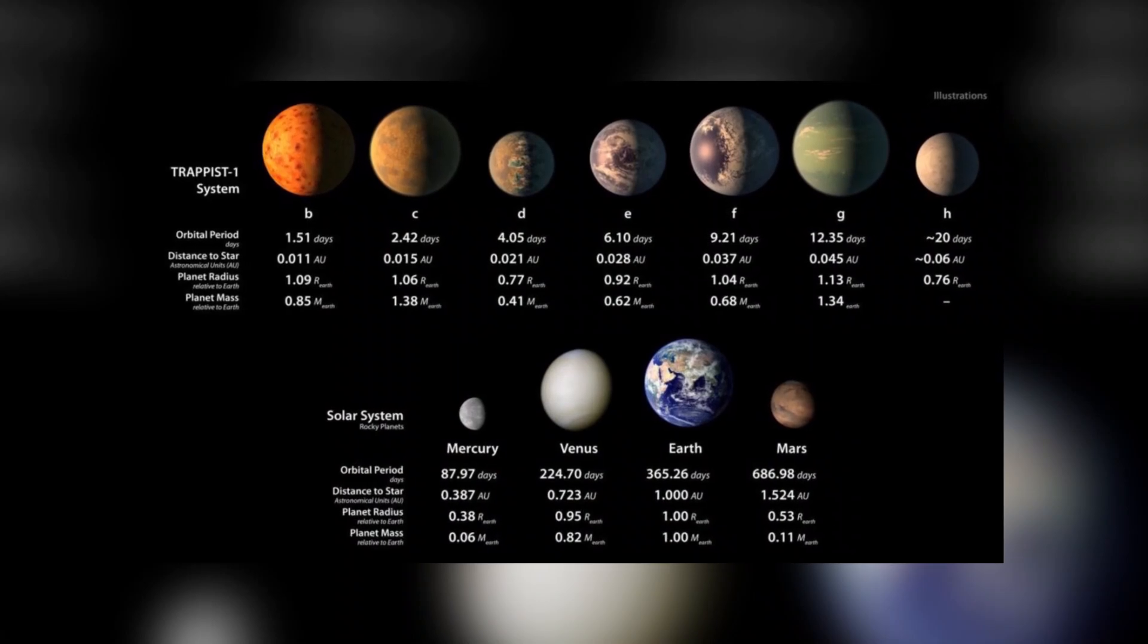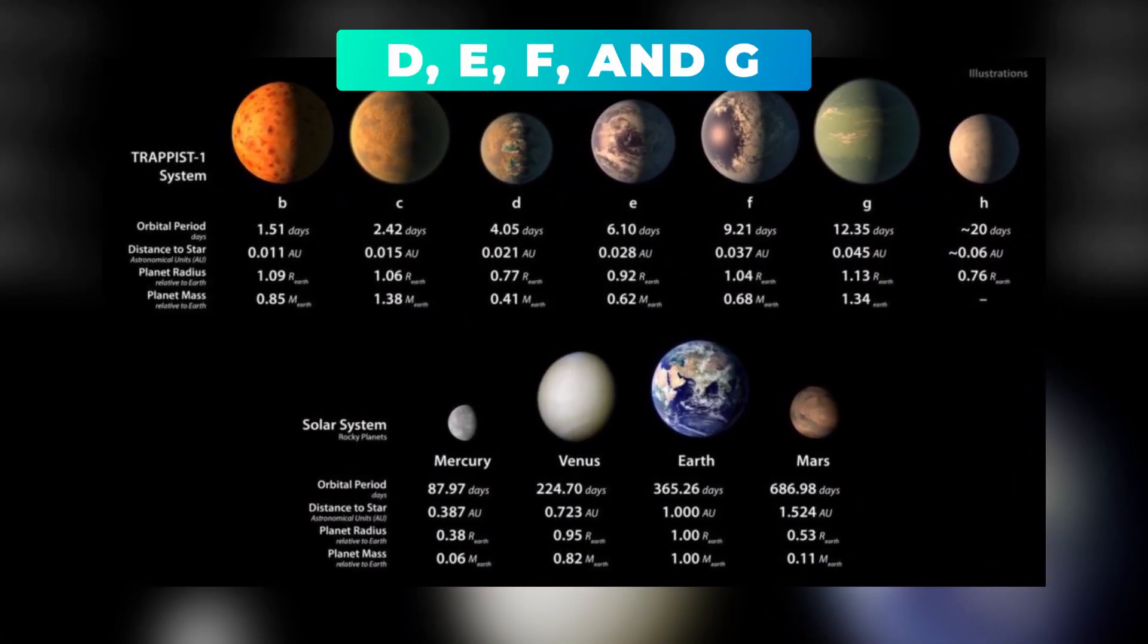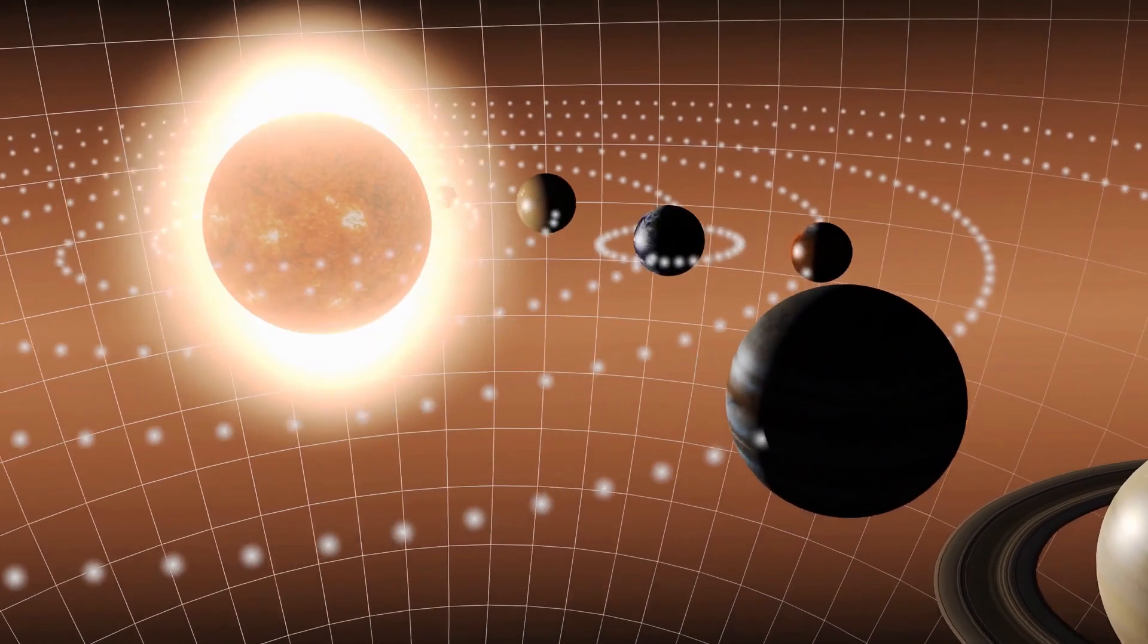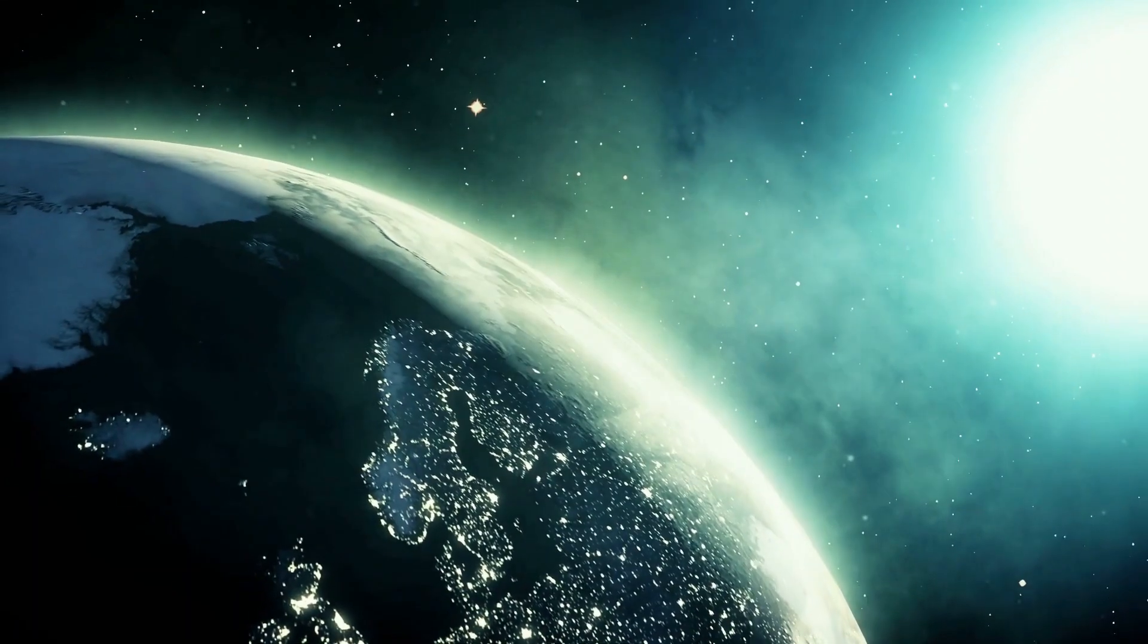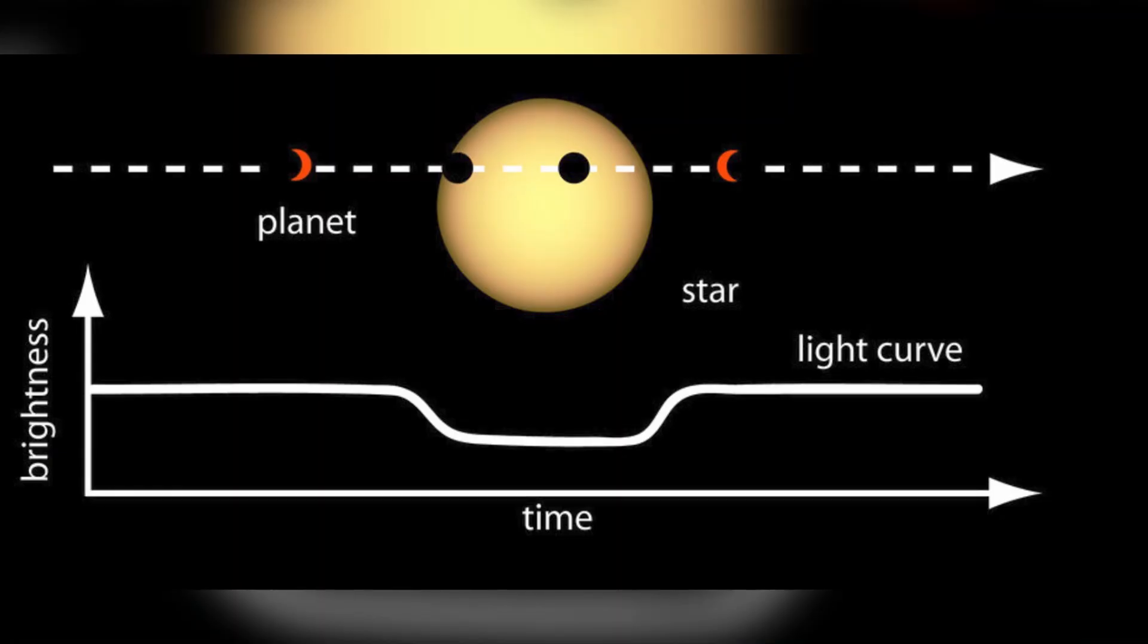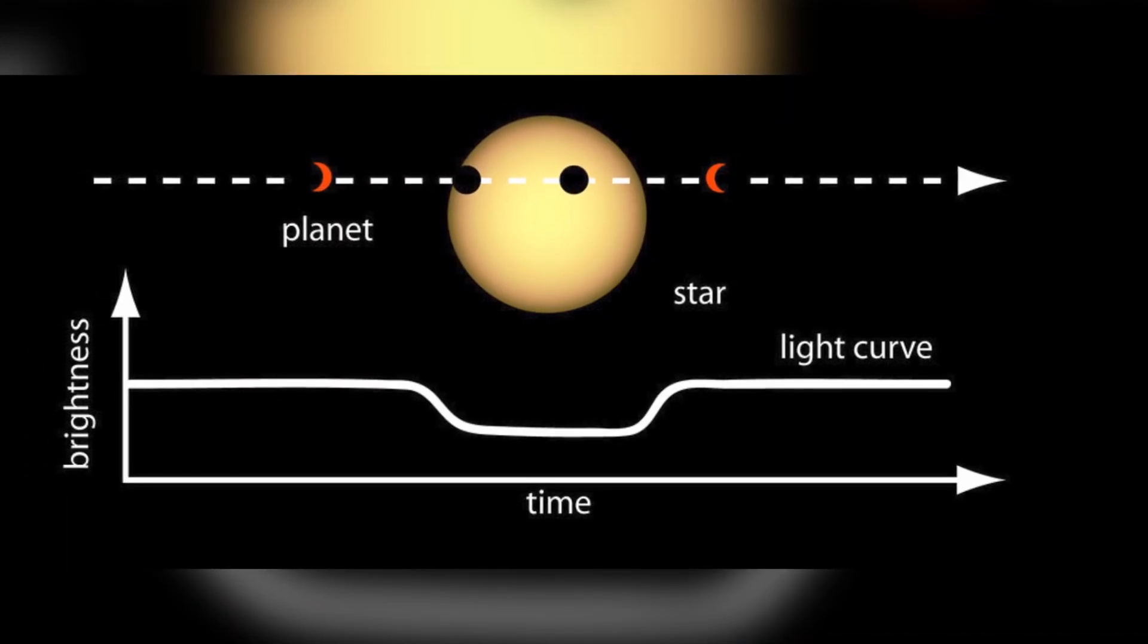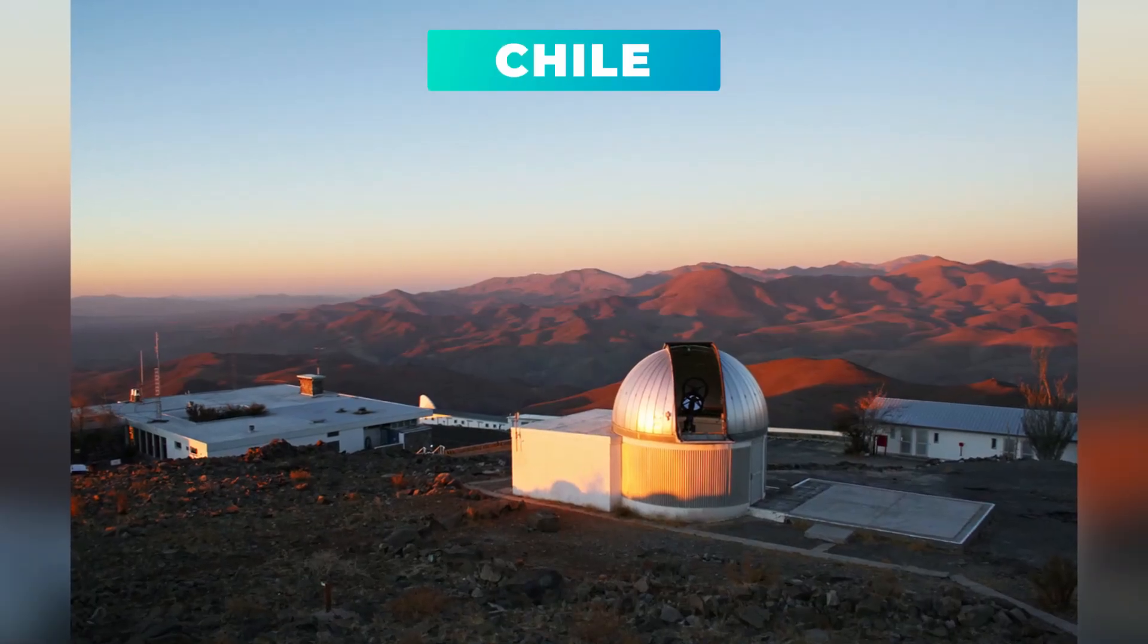In one extraordinary case, the TRAPPIST system, its planets D, E, F, and G are all in the Goldilocks zone, where it's not too hot, not too cold, but just right for liquid water to exist. It was named in honor of the Transiting Planets and Planetesimal Small Telescope, or TRAPPIST, located in Chile, after it discovered the planets there.